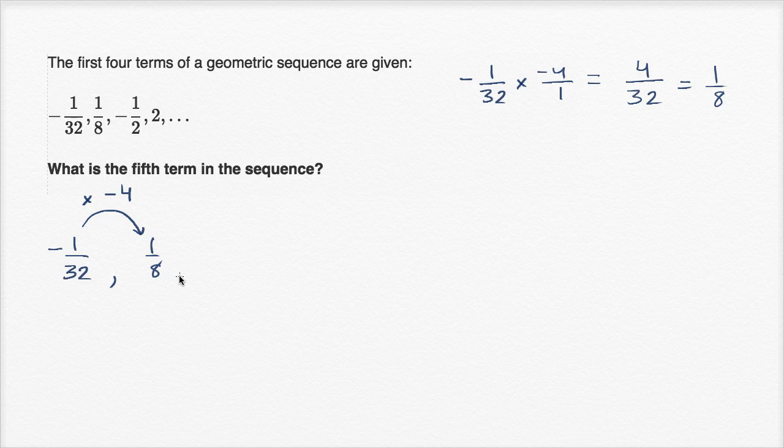Now let's see if that holds up. So to go from 1/8 to negative 1/2, we once again would multiply by negative four. Negative four times 1/8 is negative 4/8, which is negative 1/2.